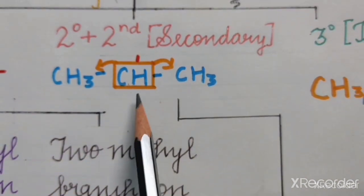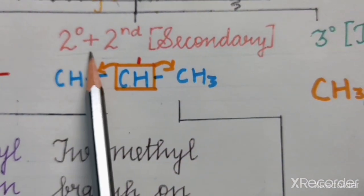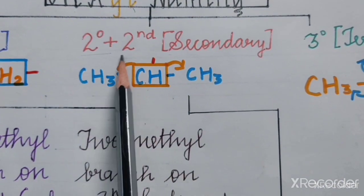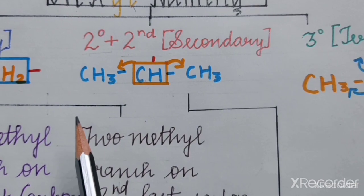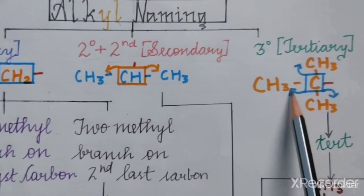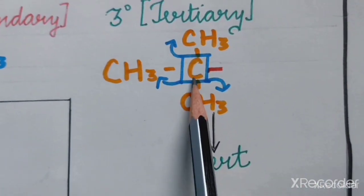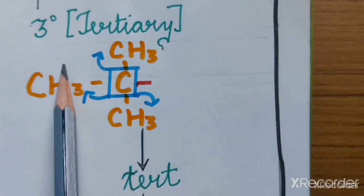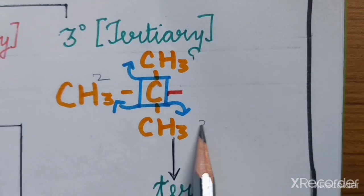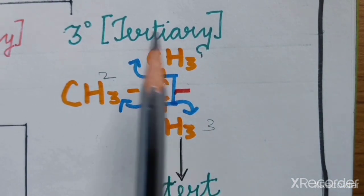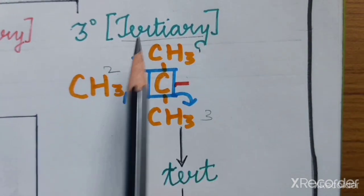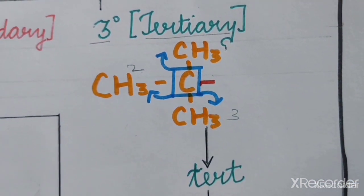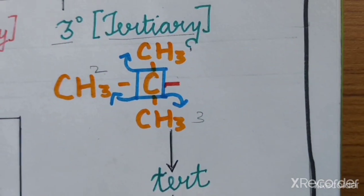If it satisfies only one condition, then it is not secondary — it has to satisfy both conditions. When the carbon with incomplete bond is directly attached to three carbons, it is known as tertiary or three degree. These are the three natures of alkyl.